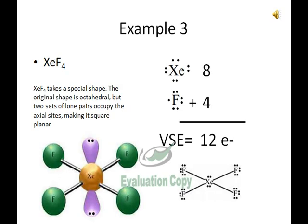You may be wondering why we have xenon, a noble gas, bonding. This is a characteristic example that you might see on your IB exams, and the scientist who did this got a Nobel Prize. Xenon, as a noble gas, will contribute 8 electrons, and the 4 fluorines will contribute 4 electrons. This brings our VSC to 12 electrons, which would imply that it takes an octahedral shape.